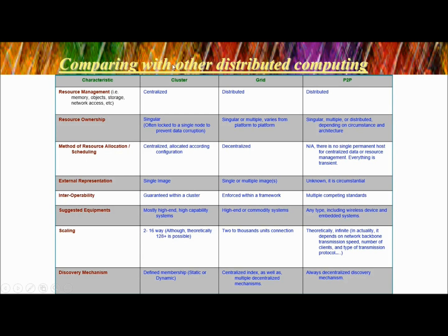In method of resource allocation or scheduling, cluster is centralized, grid is decentralized, and in peer-to-peer there is no single permanent host — everything is transient. External representation in a cluster is a single image, in grid it is single or multiple image, and in point-to-point it is unknown. Interoperability is guaranteed in a cluster, enforced within a domain in grid, and involves multiple competing standards in point-to-point. Cluster equipment is mostly high-end, high-capability systems; grid uses high-end or commodity systems; point-to-point includes any type including wireless and embedded systems. Grid connections scale to 2 to 1,000 units while point-to-point is infinite. The cluster discovery mechanism uses defined membership, which can be static or dynamic, while grid uses a centralized index as well as multiple decentralized mechanisms.